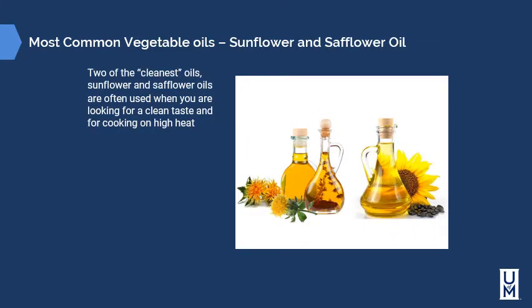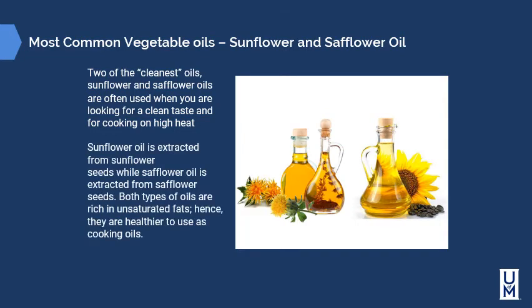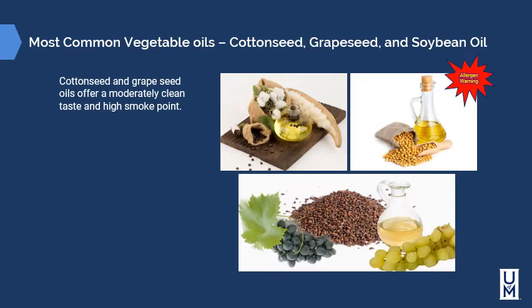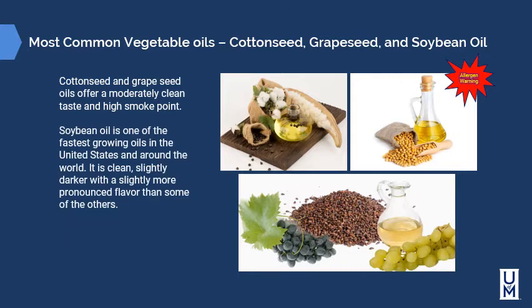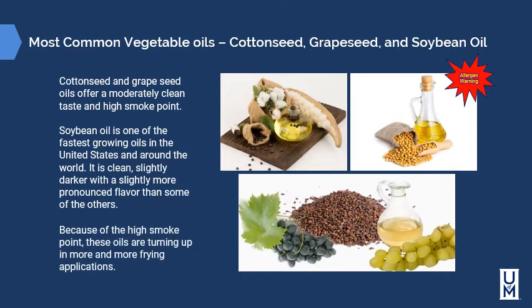Sunflower and safflower oils are two of the cleanest oils, often used for cooking on high heat when you want a clean taste. Sunflower oil is extracted from sunflower seeds; safflower oil from safflower seeds. Both are rich in unsaturated fats, making them healthier cooking oils. Cottonseed and grape seed oils also offer clean tastes and a high smoke point. Soybean oil is one of the fastest-growing oils in the US and around the world — it is clean, slightly darker, and slightly more pronounced in flavor. Due to their high smoke points, these oils are increasingly used in frying applications.